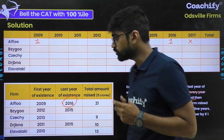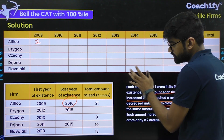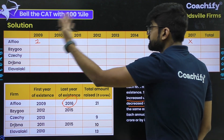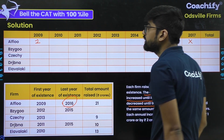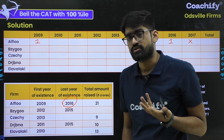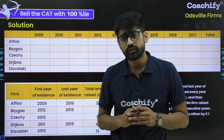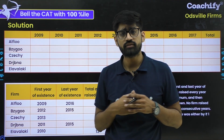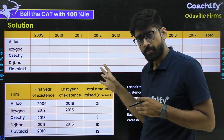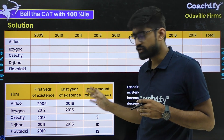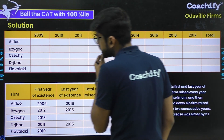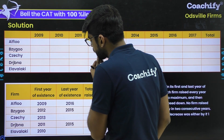Now what we have to do is club this information with the table and fill it in so we can answer all the questions. Let's begin solving. For A, its first year of existence is 2009 and last year is 2016. Since each firm raises exactly 1 CR in their first and last year, we put 1 CR in 2009 and 1 CR in 2016 for A.